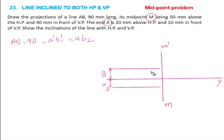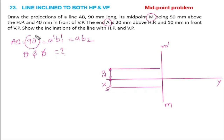They are asking us to find the values of theta and phi. M dash is the actual midpoint in the front view. You should not directly take 90mm — you have to take only 45mm. Take 45mm on the compass with M dash as the center and try to cut an arc. That distance gives the half-length end A position.